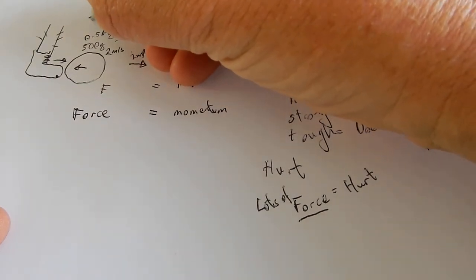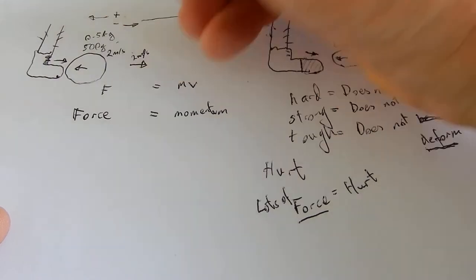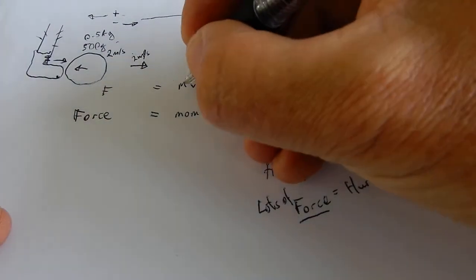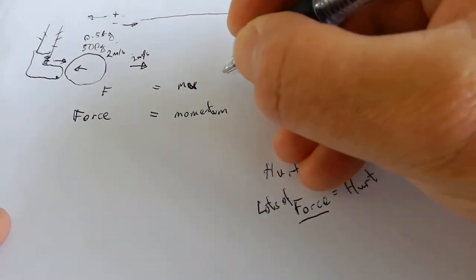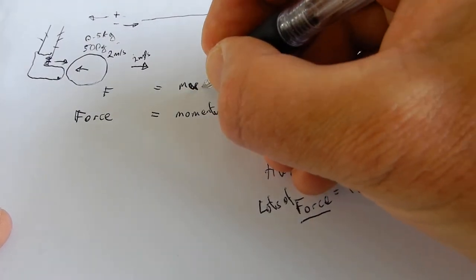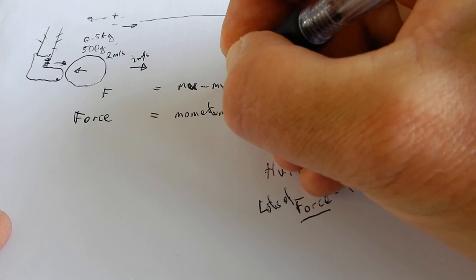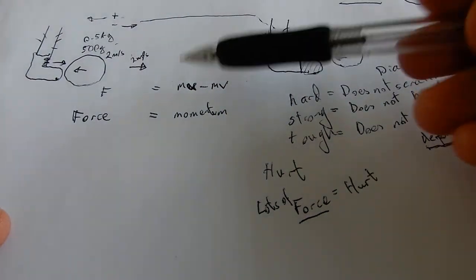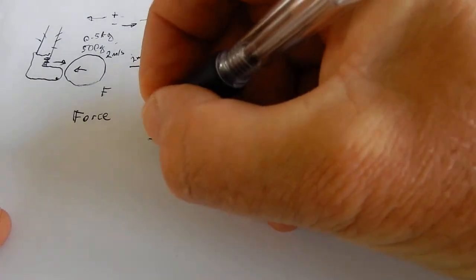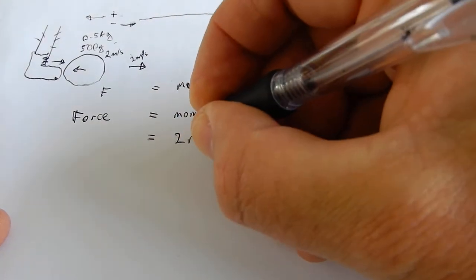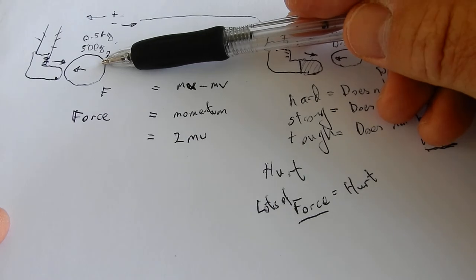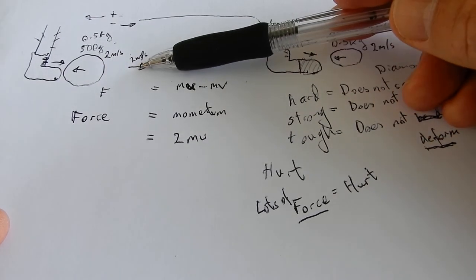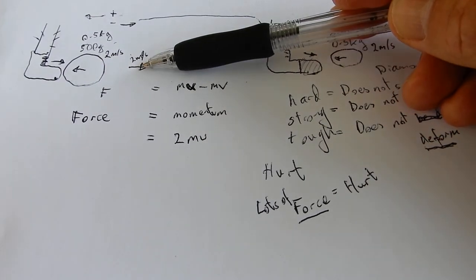Minus is in that direction. Mu. And then we talk to the class about why we don't use u and v. Minus mv. So this will end up being 2mu. Because not only are we going to stop this ball. But we're going to give it the same speed in the opposite direction.